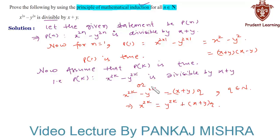We rewrite this as x raised to 2k equals y raised to 2k plus (x plus y) times q, by transposing y raised to 2k from the LHS to the RHS. We will call this Equation 1.